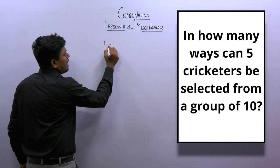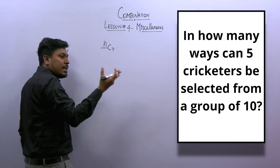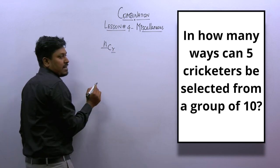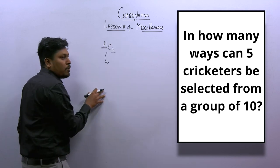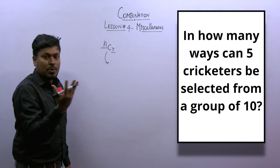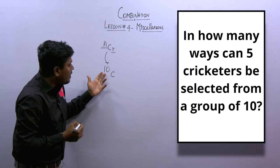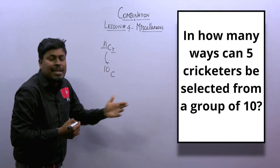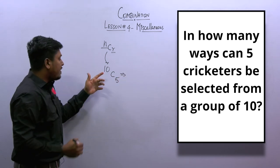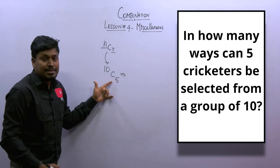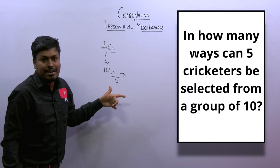The formula for combination is NCR. Here, the value of N is the total number of people in the group, and R is the number we need to select. According to the question, the total group size is 10, so N = 10. Out of 10, we need to select 5 caricatures. So the expression is 10C5.